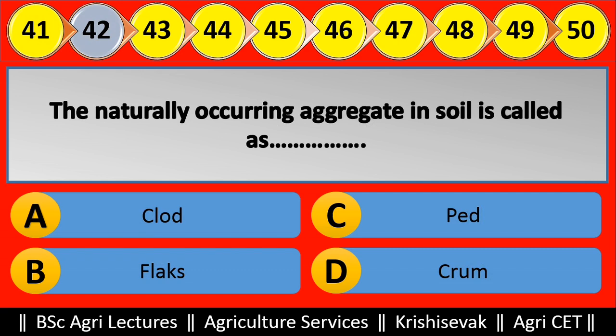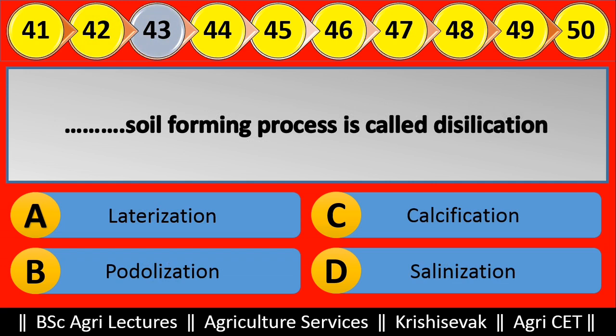Question 43: Blank soil forming process is called desilication. Options are: (a) Lateralization, (b) Podzolization, (c) Calcification, (d) Salinization. Right answer is Lateralization, option A.